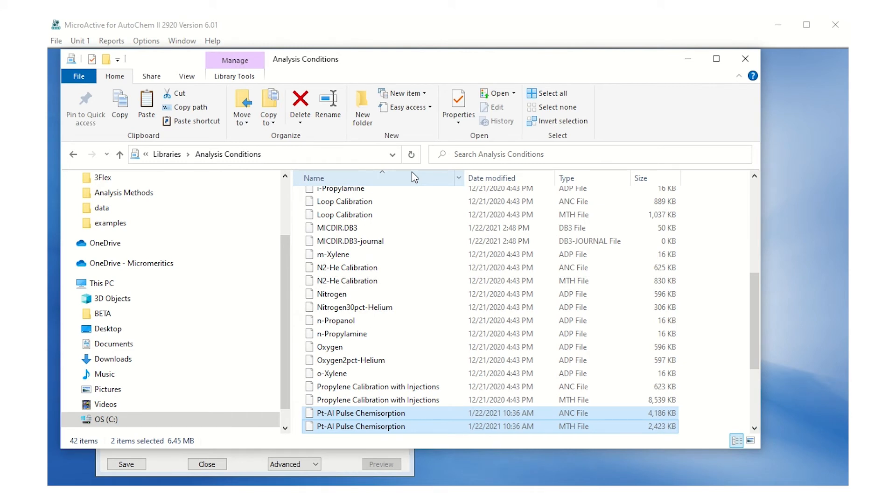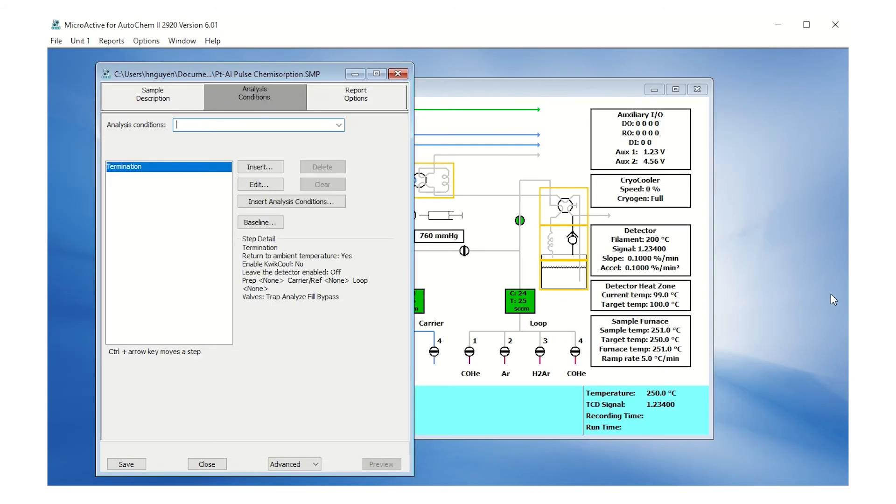The Analysis Conditions are now updated. Go back to the AutoChem software window, select the drop-down box and select Platinum Alumina Carbon Monoxide Pulse Chemisorption.